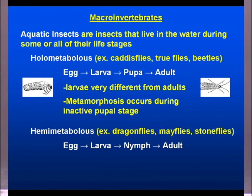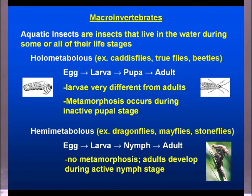The next category is hemimetabolous insects, which include dragonflies, mayflies, and stoneflies. These go from an egg to a larva, then to a nymph stage, and finally the adult. What is lacking here is the metamorphosis stage — there is no inactive pupal stage. The nymph is actually a very active part of the life history, and the adult starts developing within that nymph stage. The nymph generally crawls out of the water and the adult emerges from it, as you can see in this picture of a dragonfly.